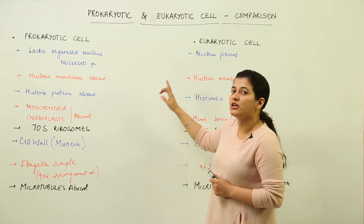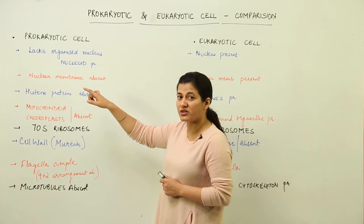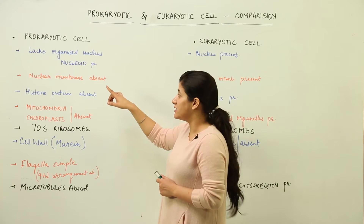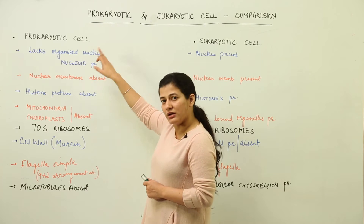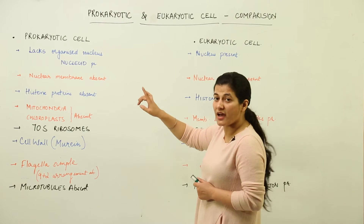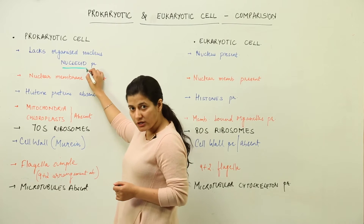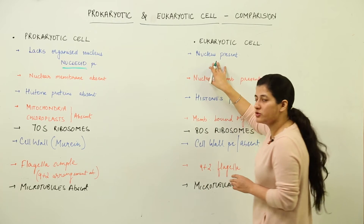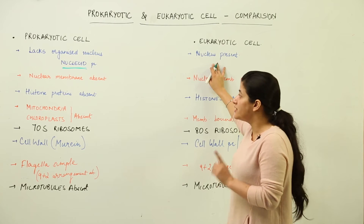First, we need to learn whether it is having a nucleus or not. The prokaryotic cell is termed 'prokaryotic' because its karyotic organization is old-world — that is, it is primitive. It does not have an organized nucleus. Comparatively, the eukaryotic cell would have one. In place of a nucleus, the prokaryotic cell has a nucleoid, while the eukaryotic cell has a proper, well-defined nucleus.